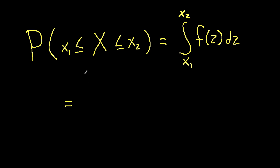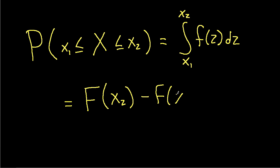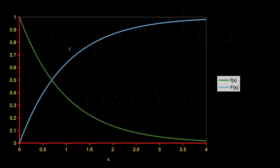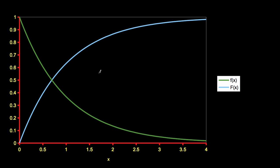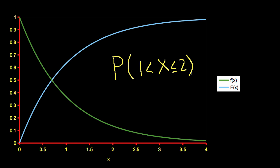I can also show that this is equivalent to F of x2 minus F of x1. So in the case where we have an exponential random variable, suppose we want to find the probability that the random variable lies between 1 and 2.